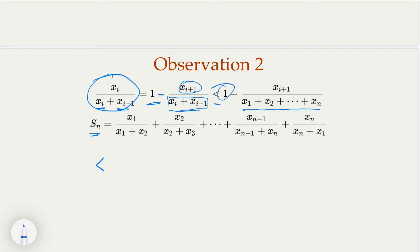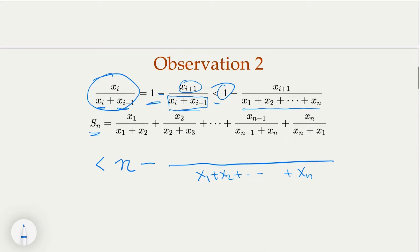Each term gives 1, so with n terms I have n. The minus terms now have a common denominator x1, x2, up to xn. When you add everything up it's again identical: x1 plus x2 to xn, which is nothing but 1. So the result is n minus 1. We have proven the original inequality.